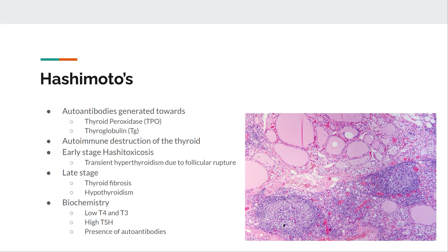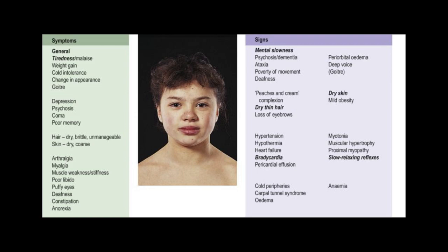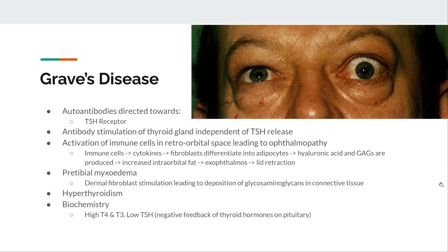In late-stage Hashimoto's, the thyroid is fibrosed with adipose tissue replacing functional tissue, resulting in hypothyroidism. Biochemically: low thyroid hormone, high TSH due to loss of negative feedback, and the presence of autoantibodies. Graves' disease is the opposite — autoimmune hyperthyroidism where autoantibodies against the TSH receptor trigger thyroid hormone release independently of TSH. As thyroid hormone elevates, it negatively feeds back on TSH, so you have high thyroid hormone and low TSH. The exophthalmos and pre-tibial myxedema in Graves' are immune-mediated and inflammatory in nature.